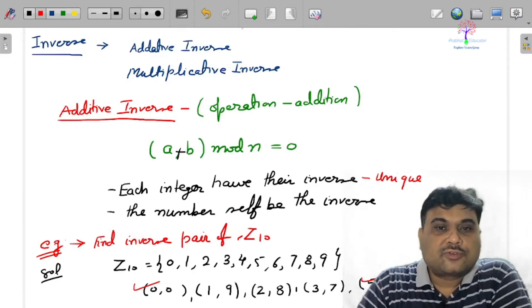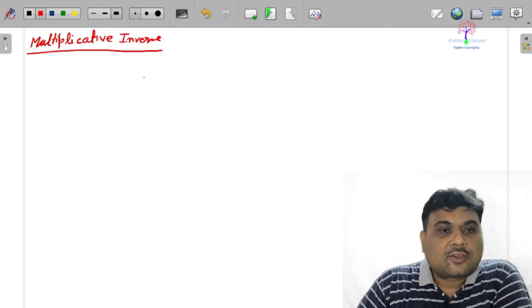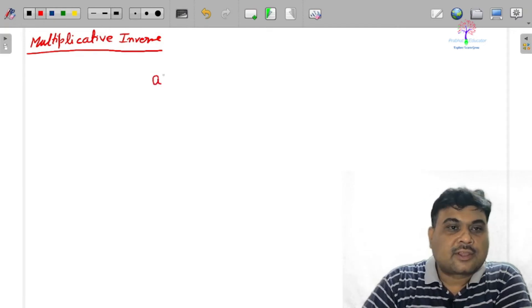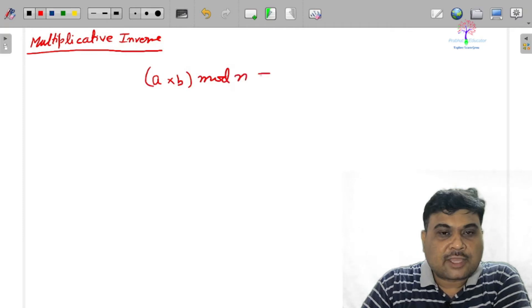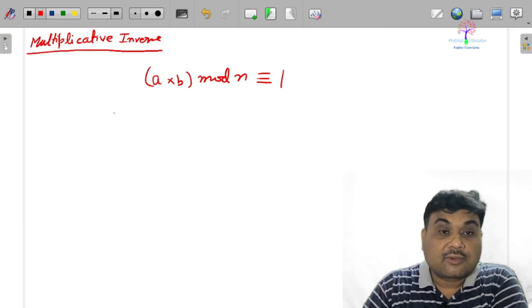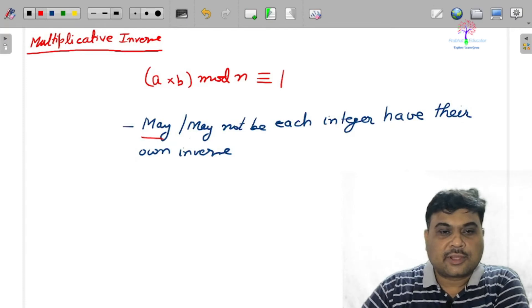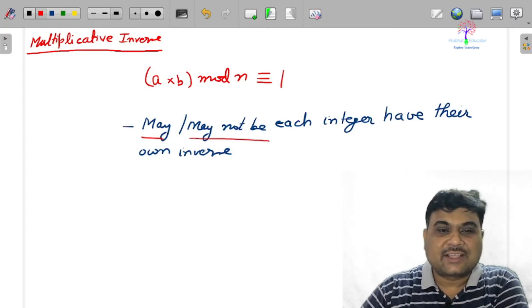Now move to multiplicative inverse. In multiplicative inverse, two integers a multiply b mod n is congruent to 1. Then you can say a is the inverse of b and b is the inverse of a. But in this case, may or may not be - each integer may or may not have their own inverse.